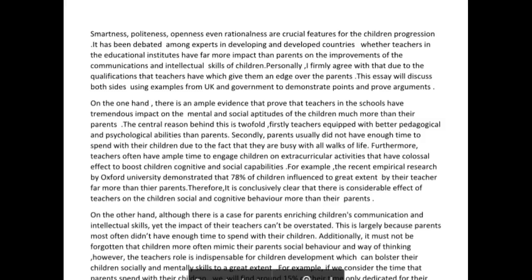Let's take a look at your Task 2 now. 'Smartness, politeness, openness, even rationalness are crucial features for the children development — development is more progression.' Let's fix that sentence. Instead of 'smartness,' say 'intelligence.' Use 'politeness, openness, and even rational thought,' or 'rational thinking,' or 'logical thinking.' Something else would probably be better there.